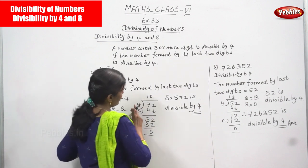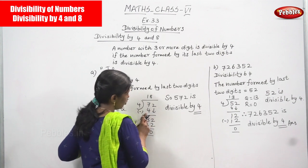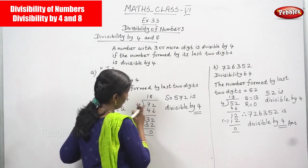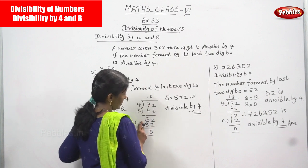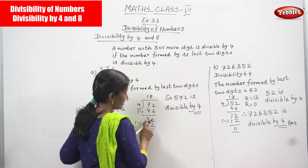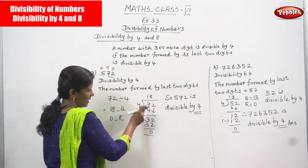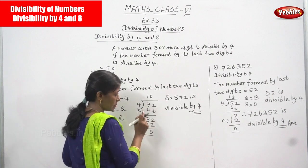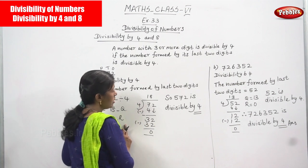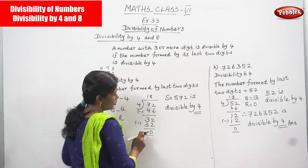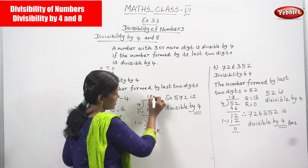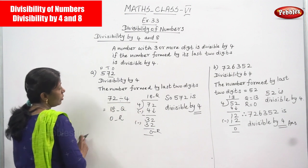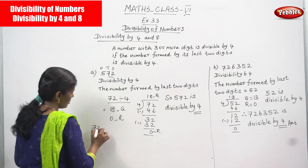Is 72 divisible by 4? Do the normal division: 72 is the dividend and 4 is the divisor. 7 divided by 4 — four ones are 4, so write 4; 7 minus 4 gives 3. Three is not enough to divide, so bring down the next digit: 32. Now 32 divided by 4 — four eights are 32, so 32 minus 32 gives zero. The remainder is zero and the quotient is 18.